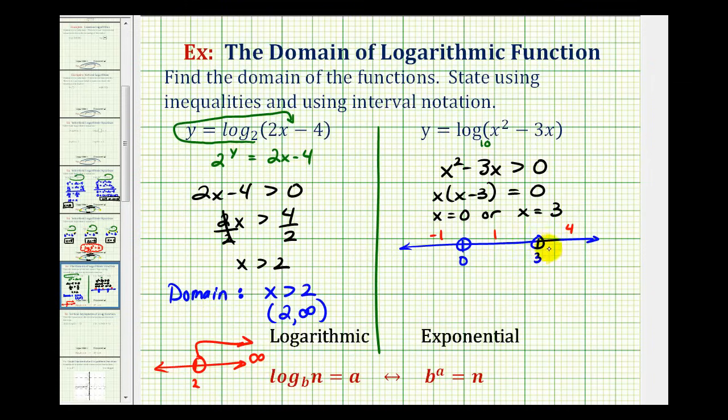If we let x equal four, we'd have four squared is 16 minus 12. That's four, which is greater than zero. Let's graph it approaching positive infinity.